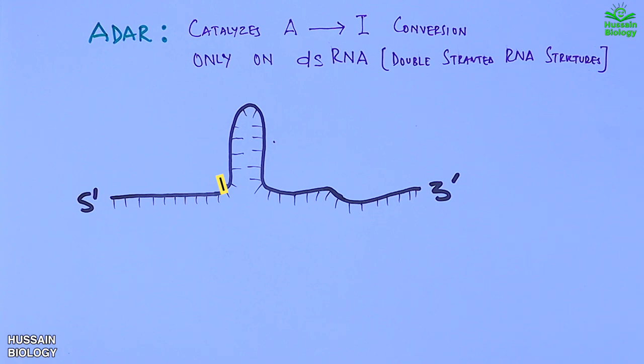The ADAR mediated RNA editing regulates and diversifies the transcriptome. Like we have the regulation of serotonin receptor by A to I conversion. The A to I editing in the serotonin receptor leads to several variants of mRNA molecule that in turn leads to several isoforms of receptor.